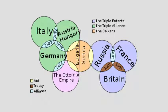At the start of World War I, two opposing alliances emerged. The Central Powers — formerly the Triple Alliance — included Germany, Austria-Hungary, the Ottoman Empire, and Bulgaria. The Allies — formerly the Triple Entente — included Britain, France, and Russia, and later Japan, Italy, Romania, and the United States.